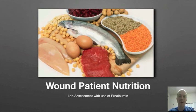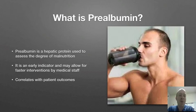So what is prealbumin? Prealbumin is a hepatic protein. It's used to assess the degree of malnutrition, and it's an early indicator that may allow for faster interventions by medical staff than some of the other markers that are used. It also correlates with patient outcomes.